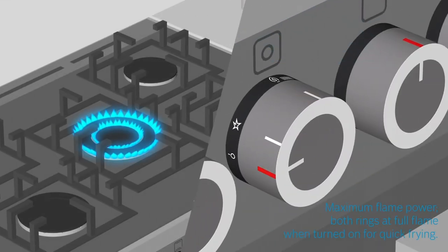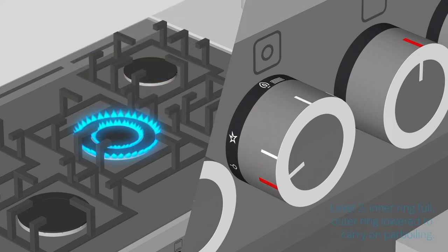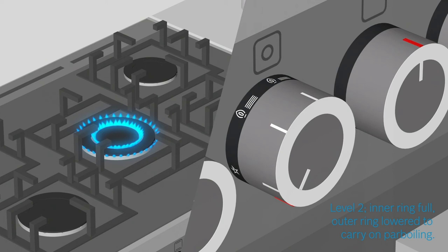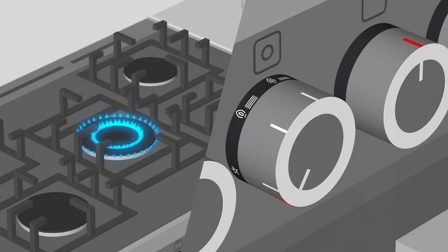When turned on, both flame rings are ignited, giving you maximum cooking power. This is perfect for quickly frying your dish. Level two lowers the flame level of the outer ring, keeping the inner ring at the maximum level so you can carry on parboiling.